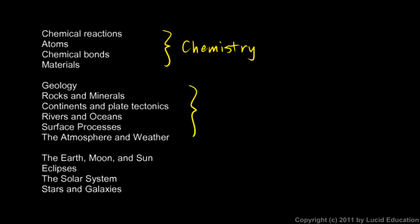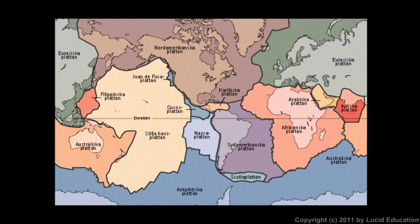If you look at these topics, they would all be considered part of what we call earth science — the study of the earth and the processes that go on on the earth. So geology and rocks and minerals. Geology is really a whole separate field; you can take an entire course in it. A lot of high schools offer a one-semester or elective course in geology, and you can certainly take college-level courses beyond that. Continents and plate tectonics is something we'll take a look at in this class too. Here's a diagram of the plates of the earth's crust.